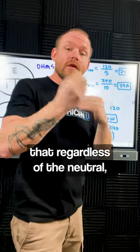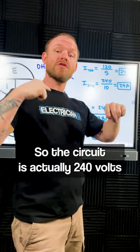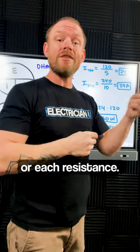So that just means that regardless of the neutral, the neutral is not being used. So the circuit is actually 240 volts going through two resistances rather than 120 going through one or each resistance.